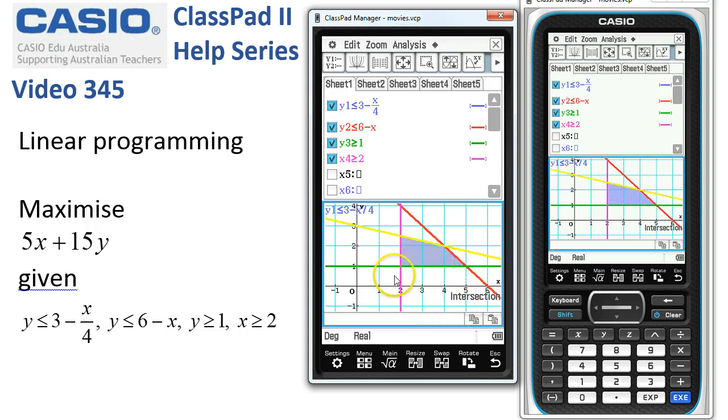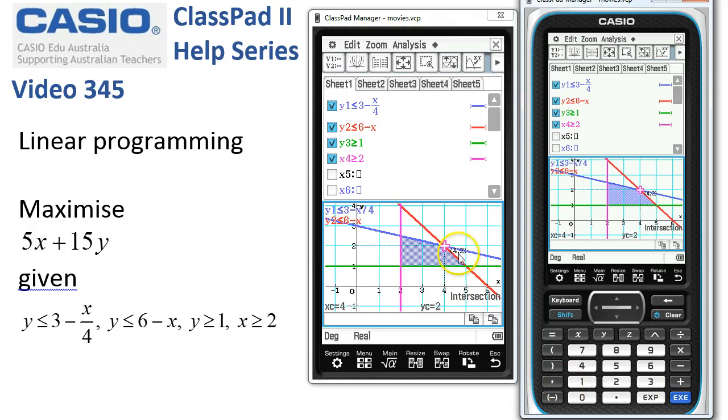So if we want to find the point of intersection of this line with the red one, we select the current line by tapping on execute. And now you can see the next one is flashing. So let's go with the red one and execute again. And that point is at 4, 2. So we make a note of that.